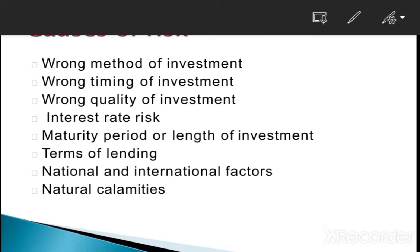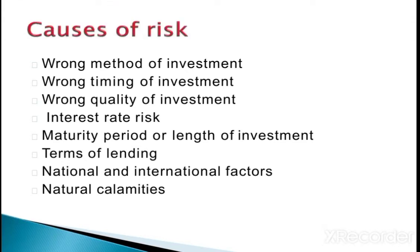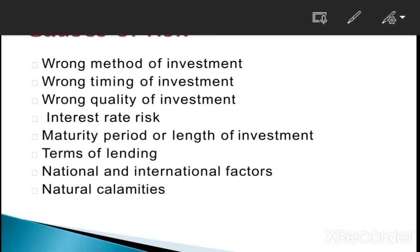Now we are going to discuss about the causes of risk — why there is risk in the organization. The first one is wrong method of investment. If our method is wrong, how we invest in the market, at what time we are investing — that also causes risk. Second is wrong quality of investment. Investment means investing in financial avenues. If the quality of investment is not good — if we are not investing in good companies, A-grade companies, blue chip companies — that decision being wrong is a cause of risk.